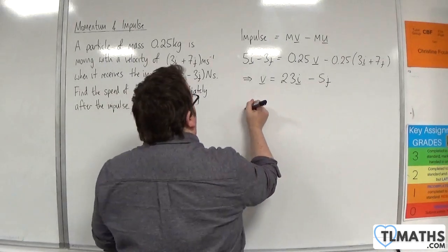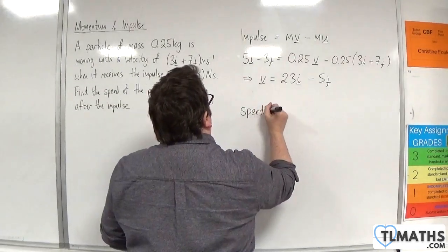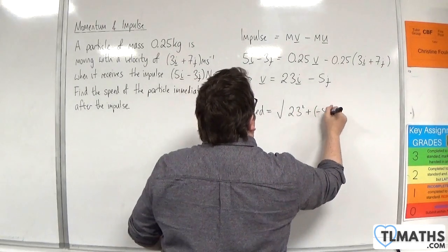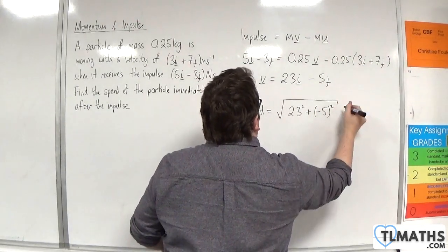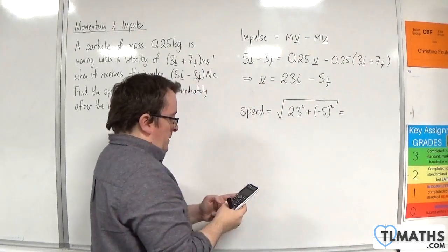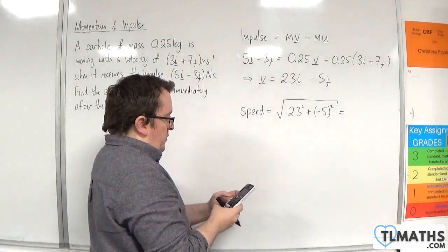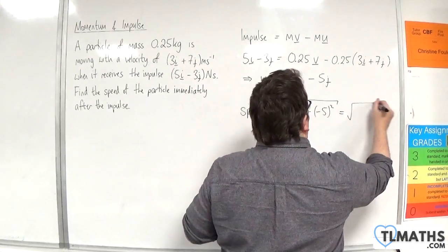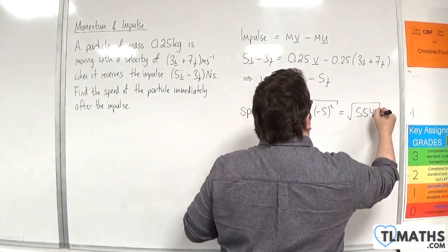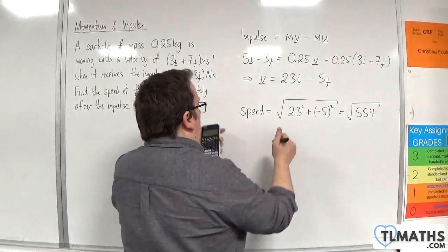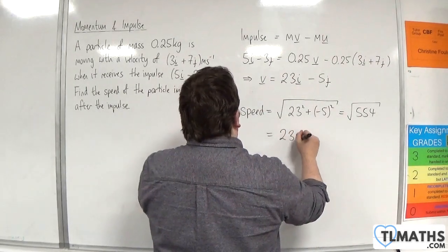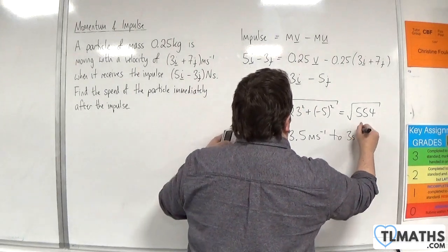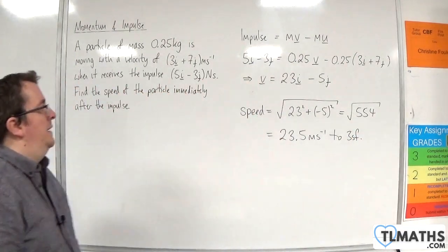The speed equals the square root of 23 squared plus negative 5 squared. So square root of 23 squared plus 5 squared is the square root of 554, which is 23.5 meters per second to 3 significant figures.